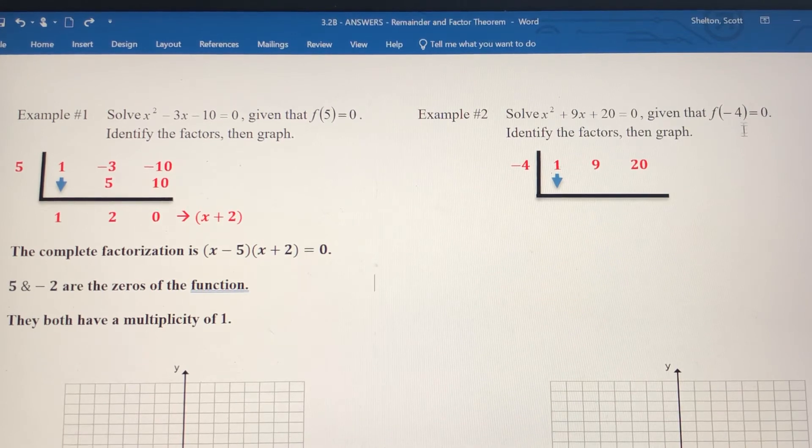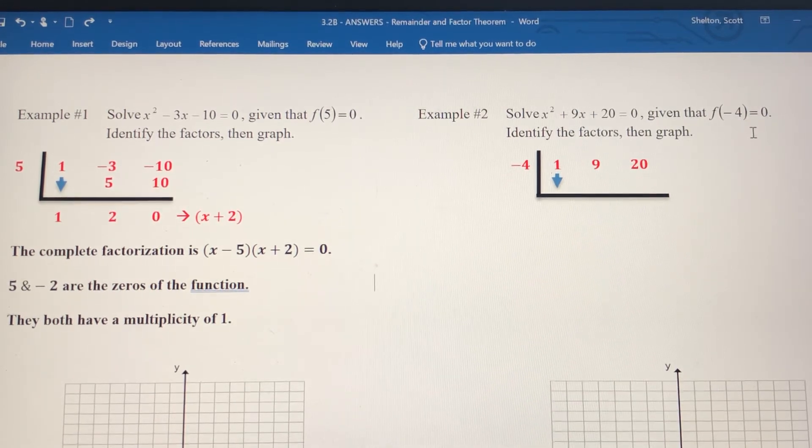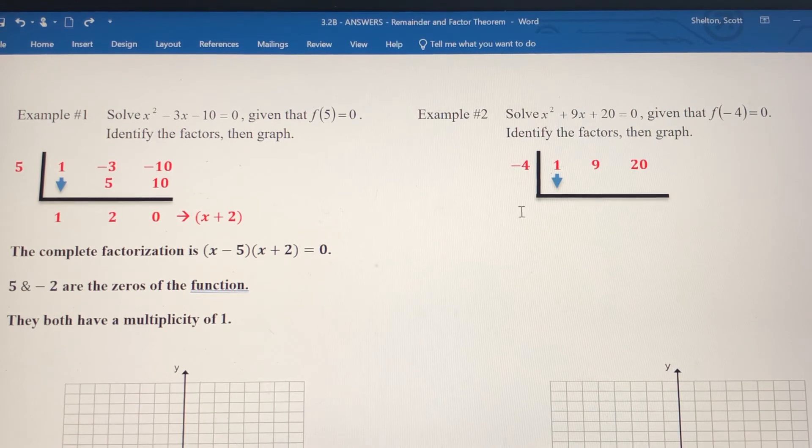If negative 4 is a 0, that means x plus 4 is one of our factors. And we're going to get the second factor when we find our quotient here.